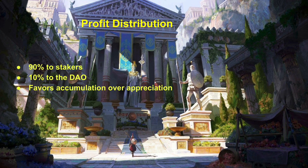For the initial profit distribution, the team created unique incentives to bootstrap the success of this system. 90% goes to stakers and 10% to the DAO, which can be modified. Rewards are paid in OHM backed by DAI. This means Olympus DAO maintains stable intrinsic value, favoring accumulation over appreciation, like with real currency.